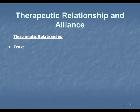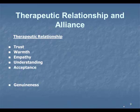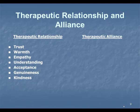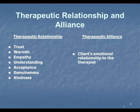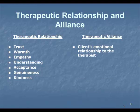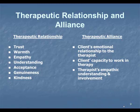So the therapeutic relationship — the difference between the therapeutic relationship and therapeutic alliance is one of the elements that was picked up. We look at the therapeutic relationship in terms of those core factors of Rogers: warmth, trust, empathy, genuineness, kindness, respect. That's what you would expect in any good, warm, positive, loving relationship. The therapeutic alliance is a slightly different focus point.